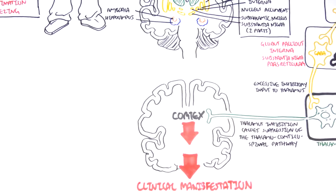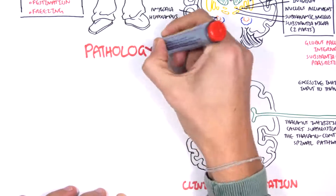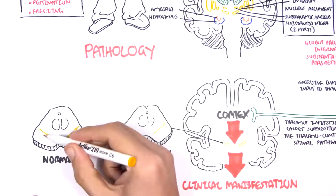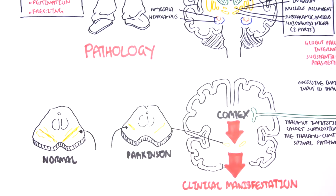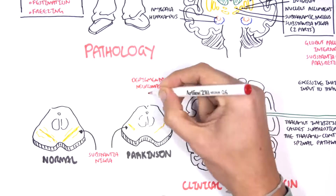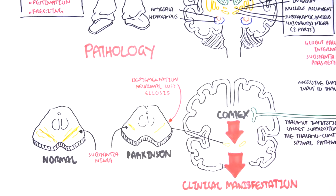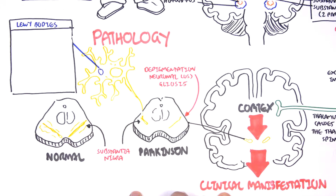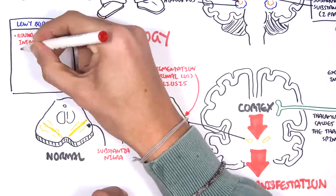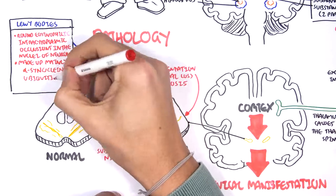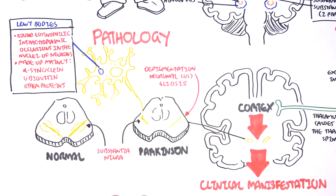Now let's look at the pathology of Parkinson's disease. Let's zoom into the substantia nigra, which is located in the midbrain. Comparing Parkinson's disease to a normal patient's substantia nigra, we see demyelination, neuronal loss, and gliosis within the substantia nigra. Another pathological hallmark is the presence of Lewy bodies within the soma of the neuron. Lewy bodies are round, eosinophilic, intracytoplasmic inclusions in the nuclei of the neuron, made up mainly of alpha-synuclein proteins, ubiquitin, as well as other proteins.